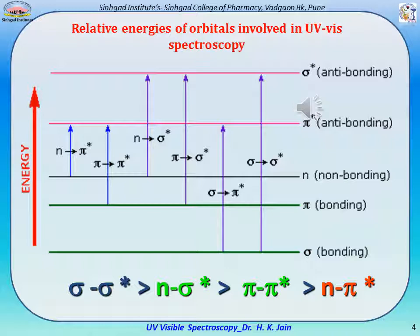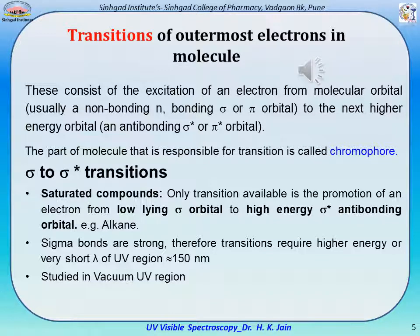The energy of sigma→sigma* transition is highest because the energy gap is large, while the energy of n→pi* transition is least because the energy gap is small. Transitions consist of excitation of an electron from a molecular orbital — usually non-bonding (n), bonding sigma, or pi — to the next higher energy anti-bonding orbital (sigma* or pi*). The part of the molecule responsible for this transition is called a chromophore.